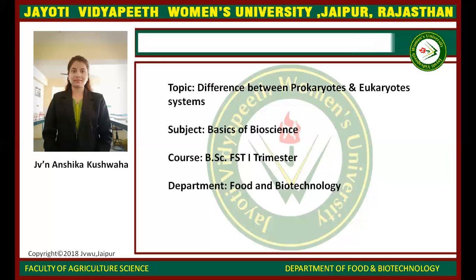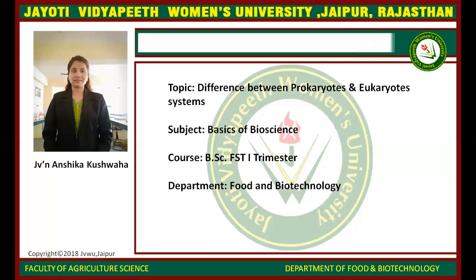Eukaryotic cells have many more cell organelles, like mitochondria, cytoplasm, nucleus, endoplasmic reticulum, cell membrane, Golgi complex, and many more. Now, basically, let us look at the differences between prokaryotes and eukaryotes.